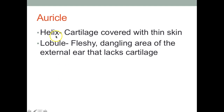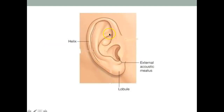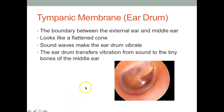The auricle has two parts: there's the helix, which is the cartilaginous part of your ear, and the lobule, which is the fleshy dangling part of the ear. So all of this outer ear portion is called the auricle. The top part is the helix and this bottom hanging portion is called the lobule. And here we have the canal — the external acoustic meatus.